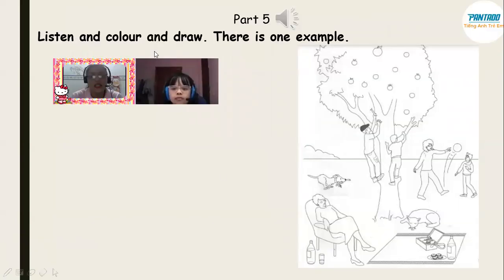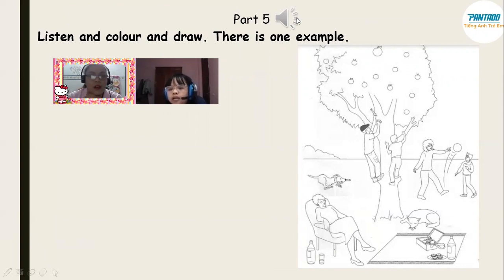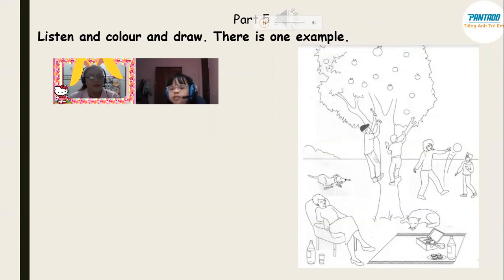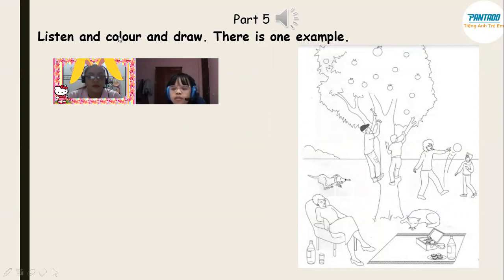This one is listen, draw, and color. We are going to color and draw something. Are you ready, Lucy? I'm ready. Part five. Look at the picture, listen and look. There is one example. Hello, Tom. Do you want to color this picture? Yes, please. In the picture there are two boys climbing the tree — one of them has a hat. Color that? I'm coloring it red. Can you see the red hat? This is an example. Now you listen and color and draw.